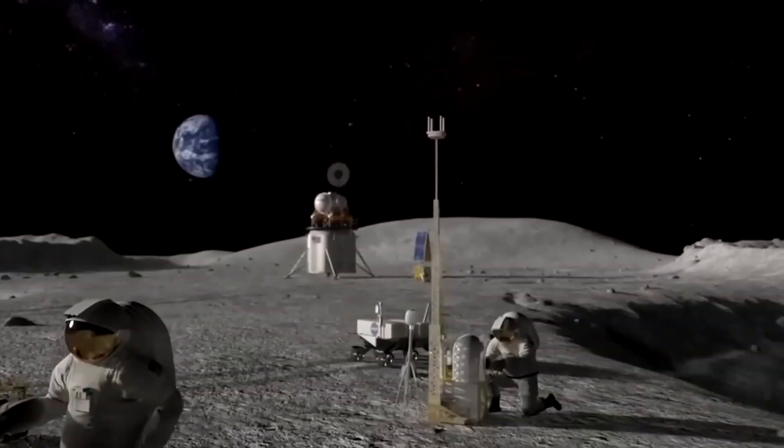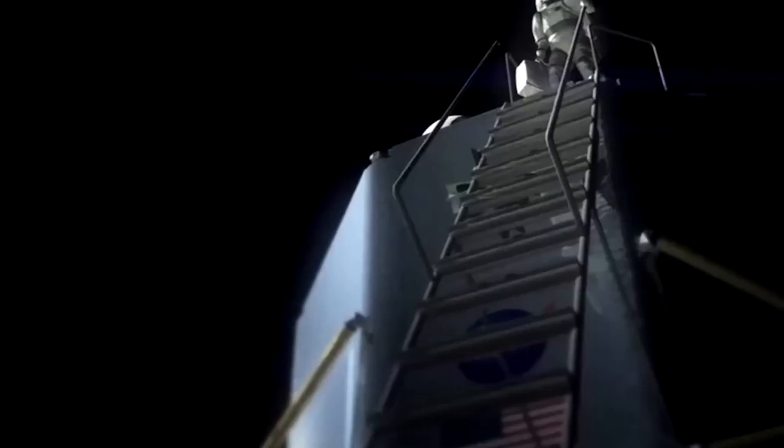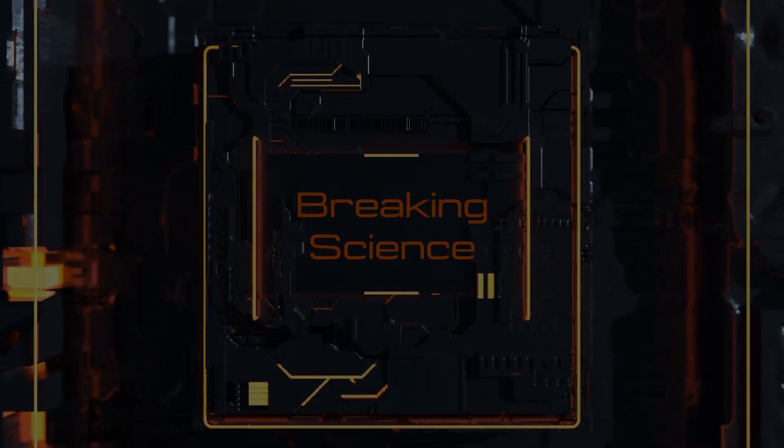And, if all goes according to plan, astronauts will be able to communicate with Earth via their smartphones in 2025.